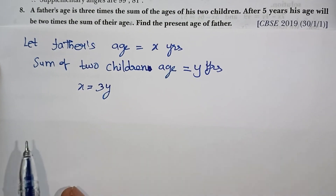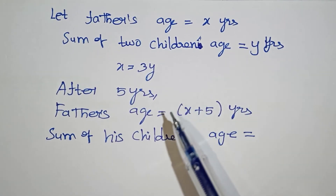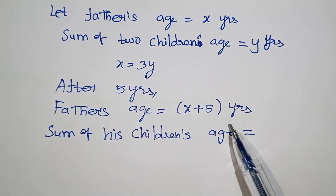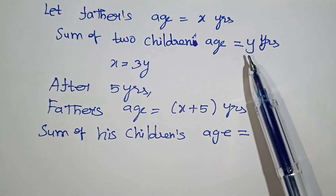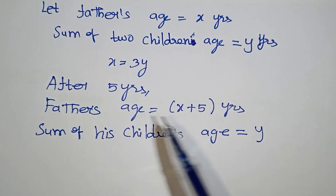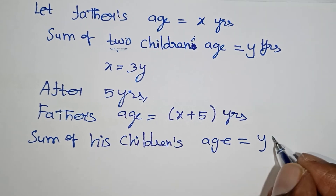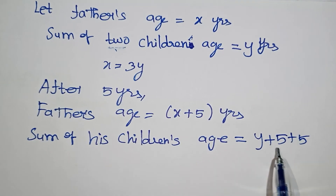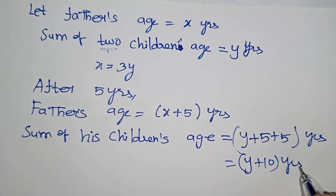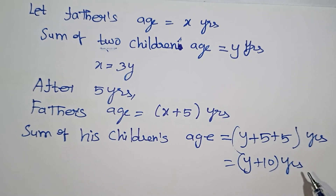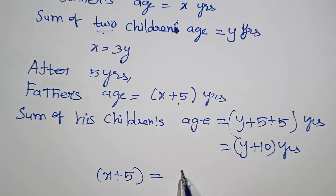Next is an age problem. After 5 years, what are the ages of the father and son? The father's present age is x, the son's present age is y. After 5 years, the father's age is x plus 5 and the son's age is y plus 5. The condition given is the father's age equals two times the son's age after 5 years.